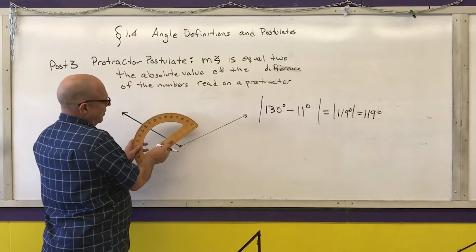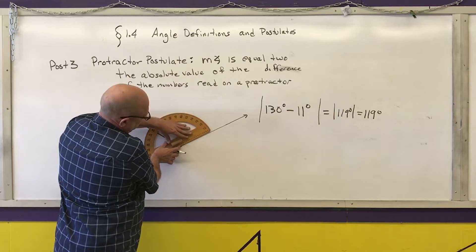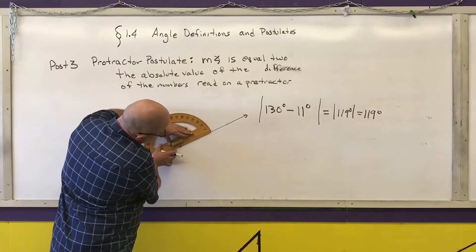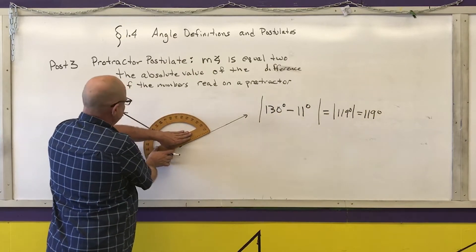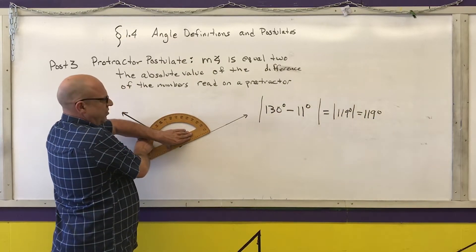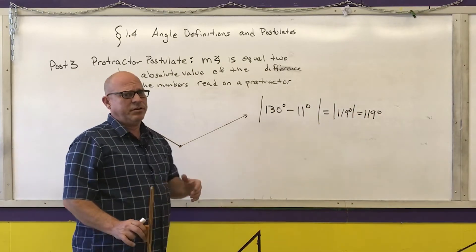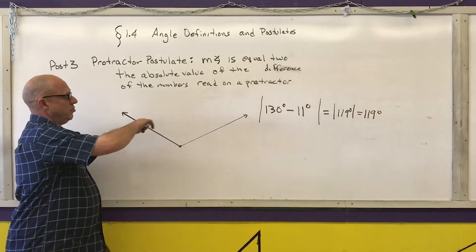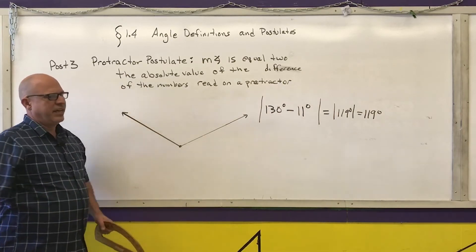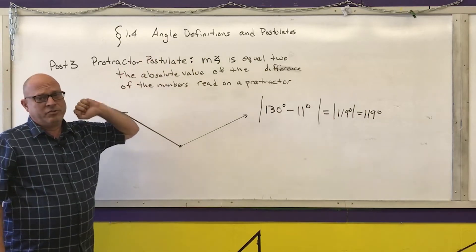Now what's convenient is if you're able to get your protractor aligned so that the 0/180 is on one of your numbers, then I would get the 119 on this one and a 0 here and 119 minus 0 is 0. So the same kind of thing you use with a ruler, you can actually get the measurement of the angle. So these are the extra words you have to have for the protractor postulate.